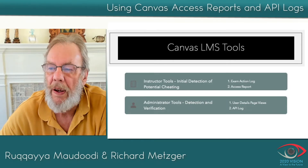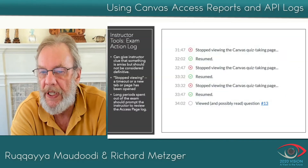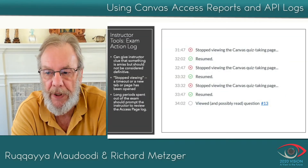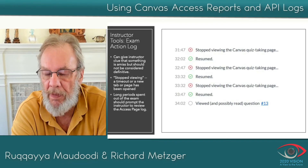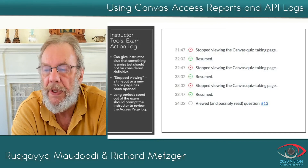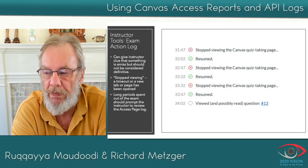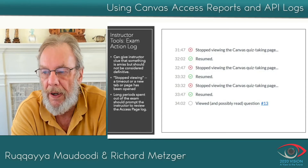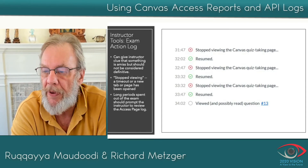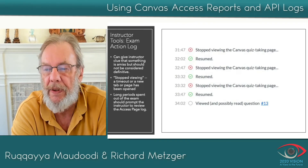The first tool available to the instructor is the exam action log, which is available in the speed grader. It lists the times that the student is either answering questions, pausing, or doing other actions during the exam. At the top of the slide you'll see a round red circle with an X, which indicates that the viewer has stopped.